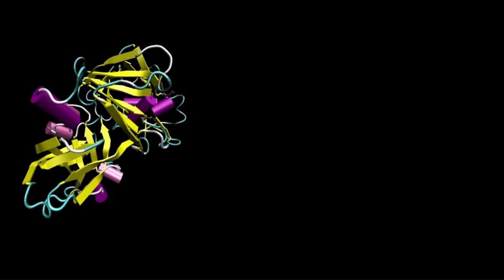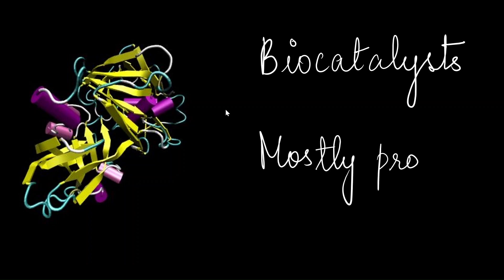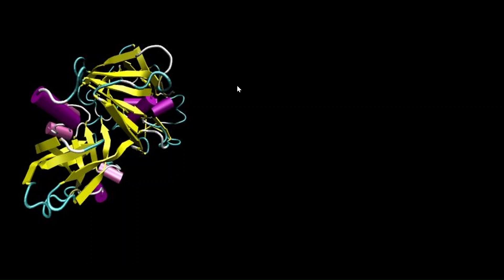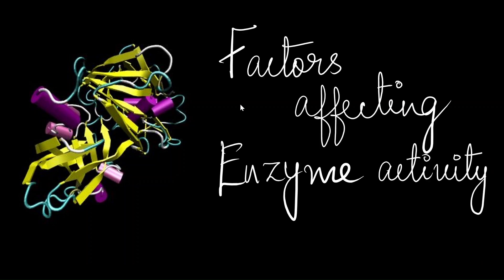Enzymes are really cool molecules which help in catalyzing metabolic functions in the body. They act as biocatalysts and most of these enzymes are proteins in their tertiary level of structure formation. Therefore, the activity of an enzyme can be affected by any factors that can alter the tertiary structure of a protein. In this video, we will be looking at four main factors which can affect enzyme activity.